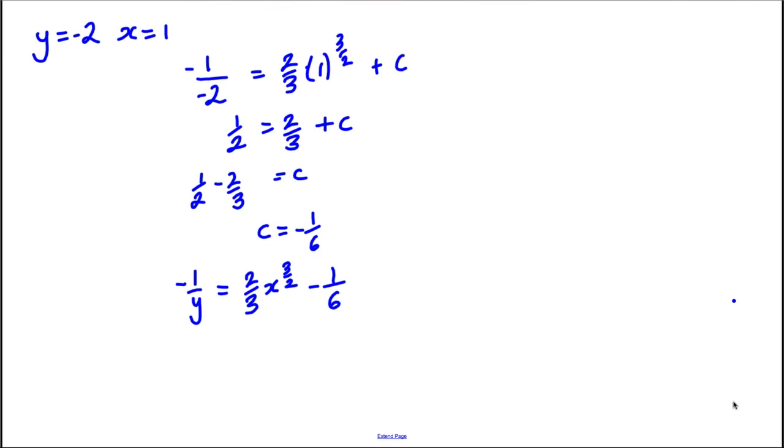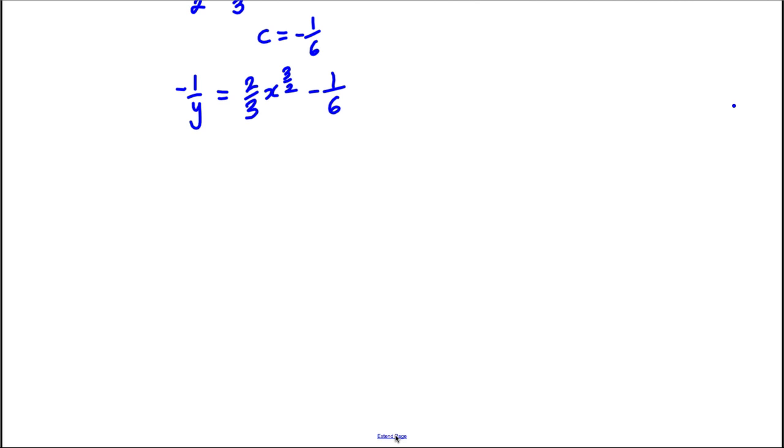Currently, we have 1/y. So what we're going to do here is we're going to try and combine this side together. Why don't I multiply both sides by -1 to start with? So I'd have 1/y = 1/6 - (2/3)x^(3/2), like that. Just makes things slightly easier.